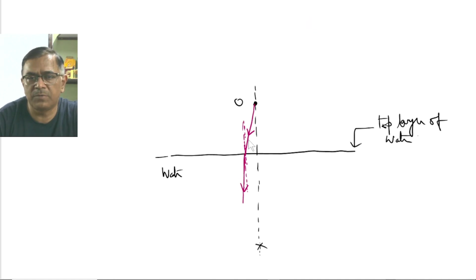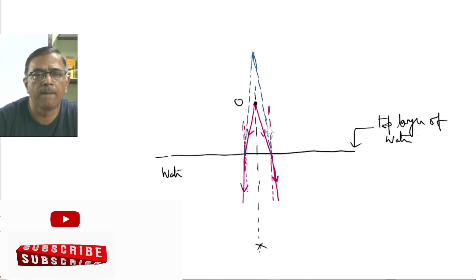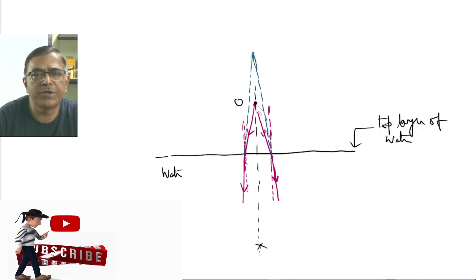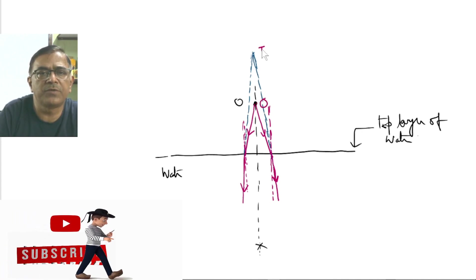Similarly, you can draw the ray on the right side of this dotted line. Let's try it. Incident ray. Normal. It will deviate towards the normal. Now what you do is, extend these two refracted rays. Extend this ray as well.